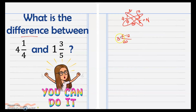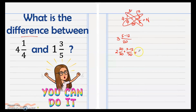So we regroup the whole number 3 and make it 2 and 20/20. Again, 2 and 20/20 is still equal to 3 — I just regrouped it. I chose 20/20 so that I can easily add it to this fraction since the denominators are the same. So 20 plus 5 minus 12 over 20: 20 plus 5 is 25, minus 12 over 20, copy the whole number. 25 minus 12 is 13 over 20. There is no common factor between 13 and 20 aside from 1, so our final answer is 2 and 13/20.